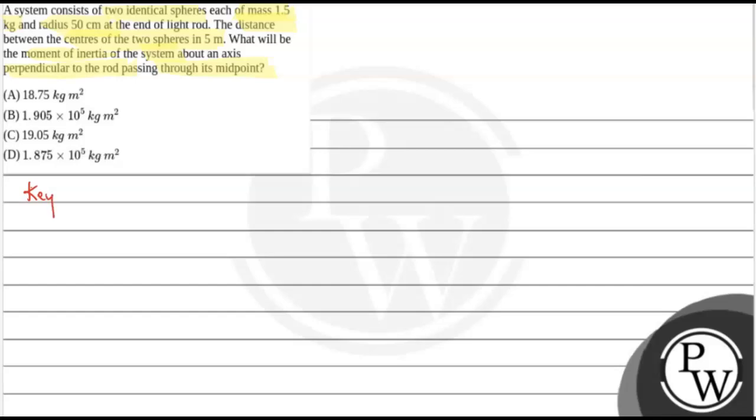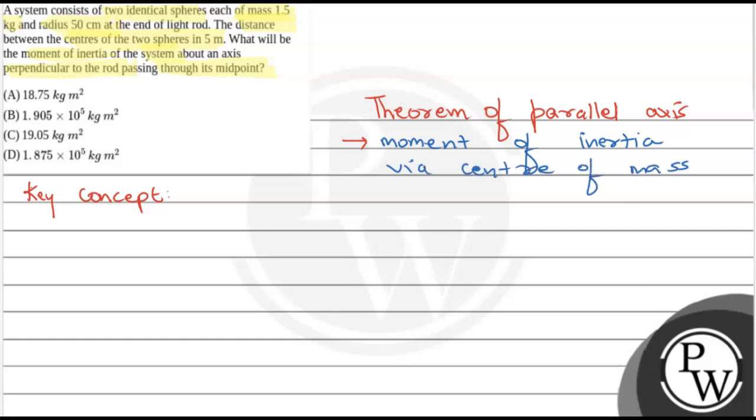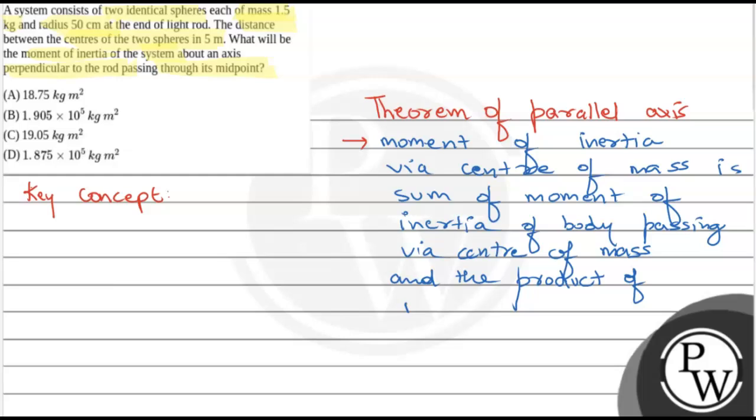Now firstly, what is the key concept? So, theorem of parallel axis. Basically, it states that moment of inertia of a body about any axis is the sum of moment of inertia of the body about an axis passing through its center of mass and the product of mass and square of the distance between them.